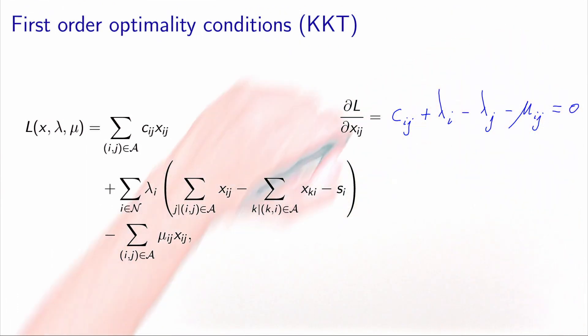The other condition is that the dual variable associated with the inequality constraints must be non-negative. If we put this together, we can write muij equals cij plus lambda i minus lambda j. And this must be greater or equal to zero.